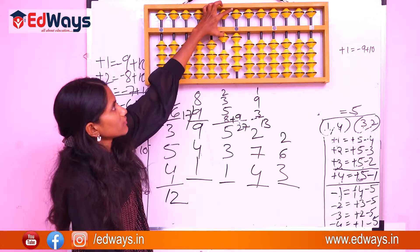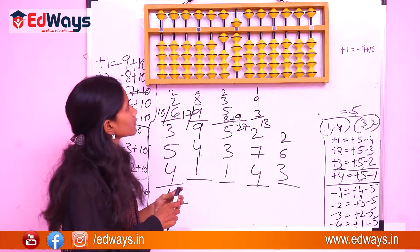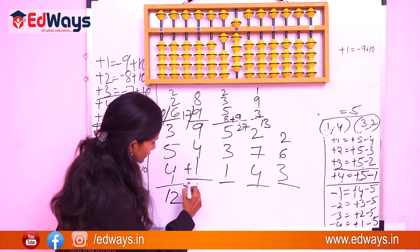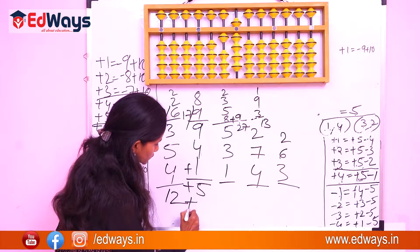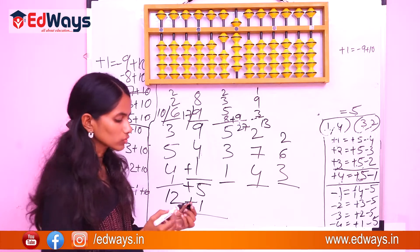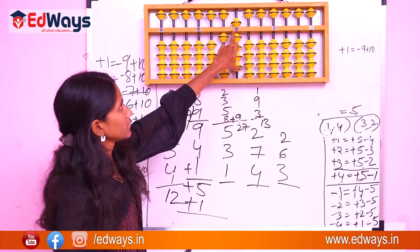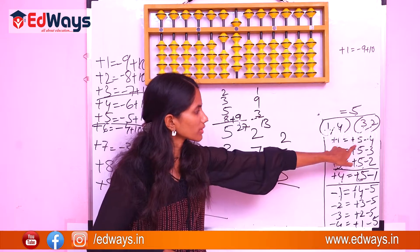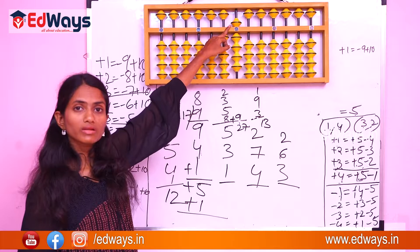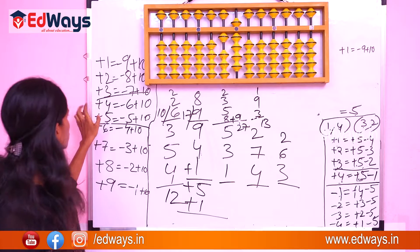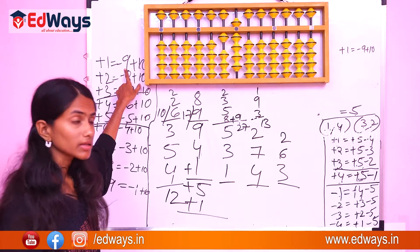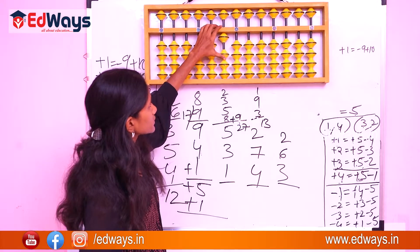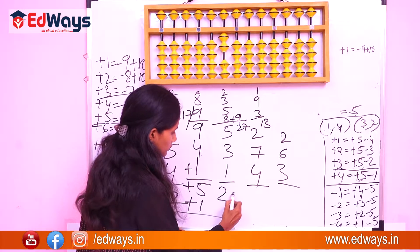Let us add 5 and then 1. For plus 1 plus 5 plus 1: is there a 1 bead available? No. Fives complement: plus 1 equals plus 5 minus 4, but plus 5 is not available. So use 1's complement: minus 9 plus 10. The answer is 20.